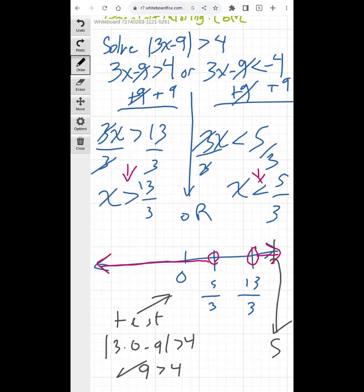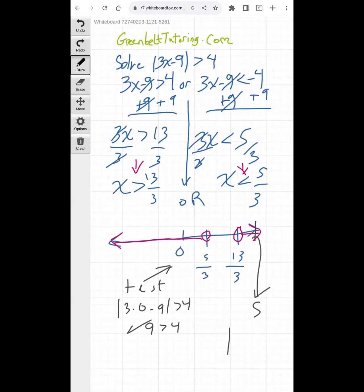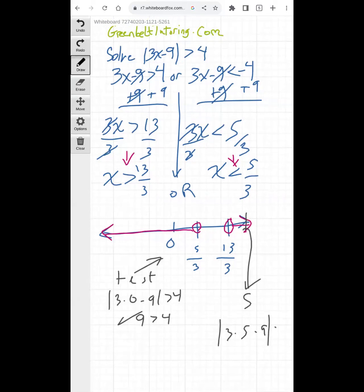And then we could test another point out here. So let's just say this point is x equals 5. So if you plug this into the original inequality, you have 3 times 5 minus 9 would have to be greater than 4. 3 times 5 is 15, 15 minus 9 is 6. Absolute value of 6, 6 is greater than 4, so that's part of the solution as well.